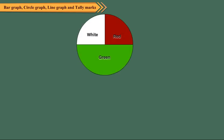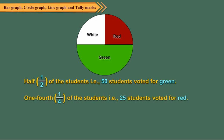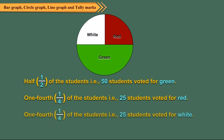A public school is thinking about changing the color of the boys' shirts. The pie chart shows the color 100 boys voted for. We can interpret the pie graph as given here. Half of the students, i.e. 50 students, voted for green. One-fourth of the students, i.e. 25 students, voted for red. One-fourth of the students, i.e. 25 students, voted for white.